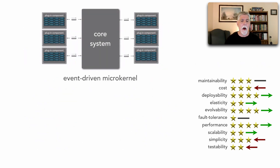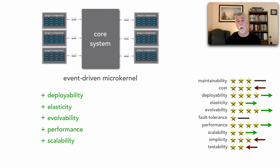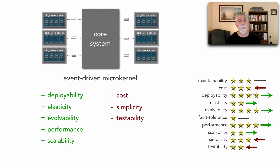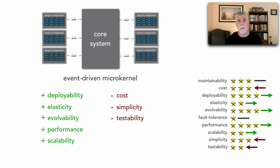To boil this down: event-driven microkernel is a very popular hybrid. What we're gaining is some level of deployability, a little more elasticity and scalability, good evolvability, and slightly better performance by removing some bottlenecks. However, the price we pay is a bump in cost, simplicity, and testability. By analyzing these trade-offs, we can determine whether this is a viable hybrid. The key point is: when forming hybrids, you can't just do straight math with the star ratings — you have to analyze each quality characteristic individually, as the fault tolerance example showed, to ensure the pluses balance the minuses.